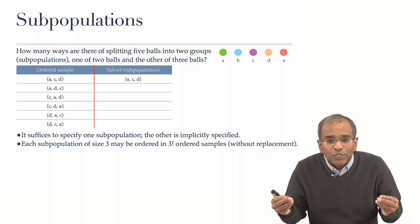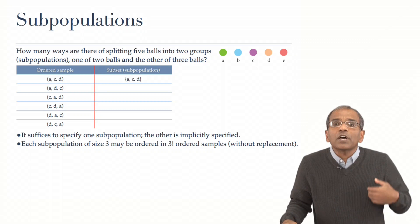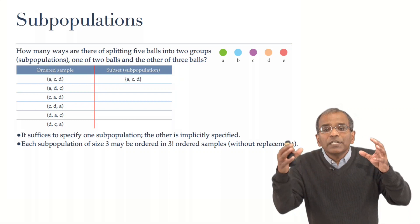Let's do this again. Every subpopulation of size three engenders an ordered distinguished sample of six different possibilities.